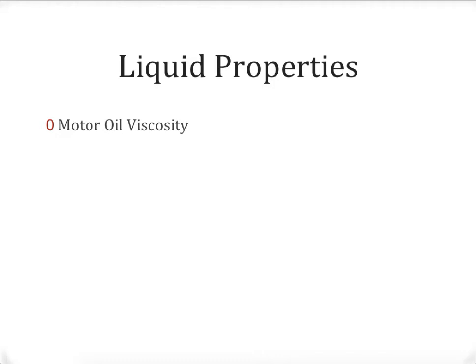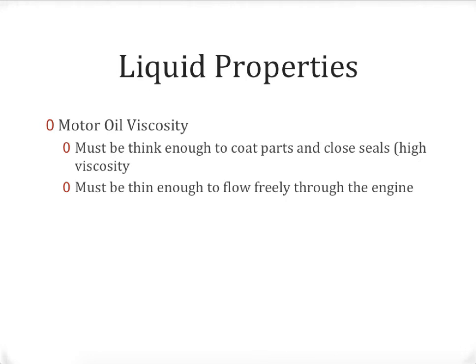This temperature dependence of viscosity brings us to one application of this property. When dealing with motor oil in a car, you might have noticed it comes in many different varieties — those varieties correspond to different viscosities. Motor oil must be thick enough to coat the parts inside your engine and close all the seals and gaps. However, it must also be thin enough to flow freely through your engine; if it's too thick, the engine can't pump it to all the parts. Since viscosity changes with temperature, you have to consider both the thickness and the fact that at different times of year, viscosity will change.